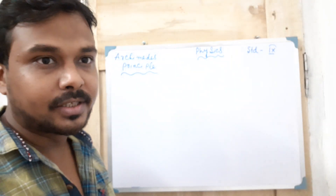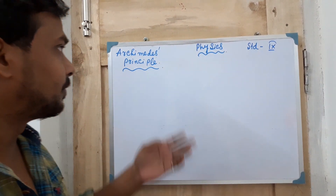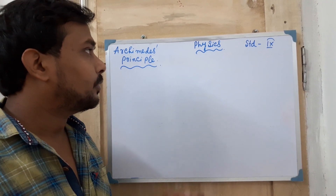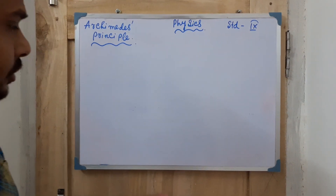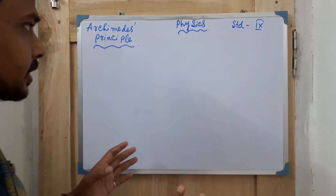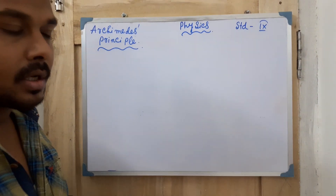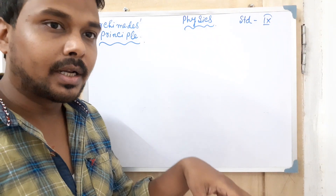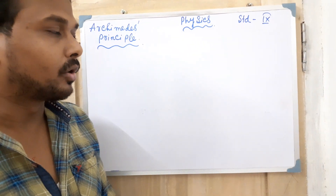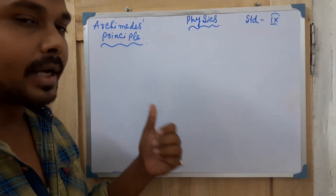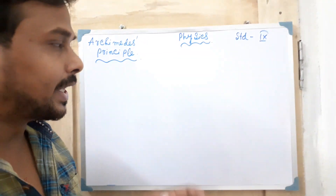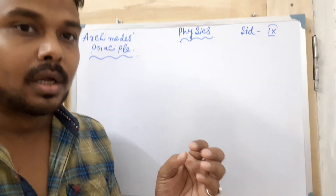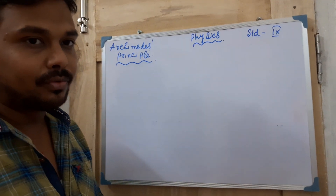Hello, students of Class 9. Today we will continue the video on Archimedes' principle. Before starting the Archimedes principle, I will first explain what upthrust actually is. When a body is kept inside a liquid, or even in air, one different type of force develops which is opposite to the gravitational force — that force is called the upthrust, or the upward directional force.